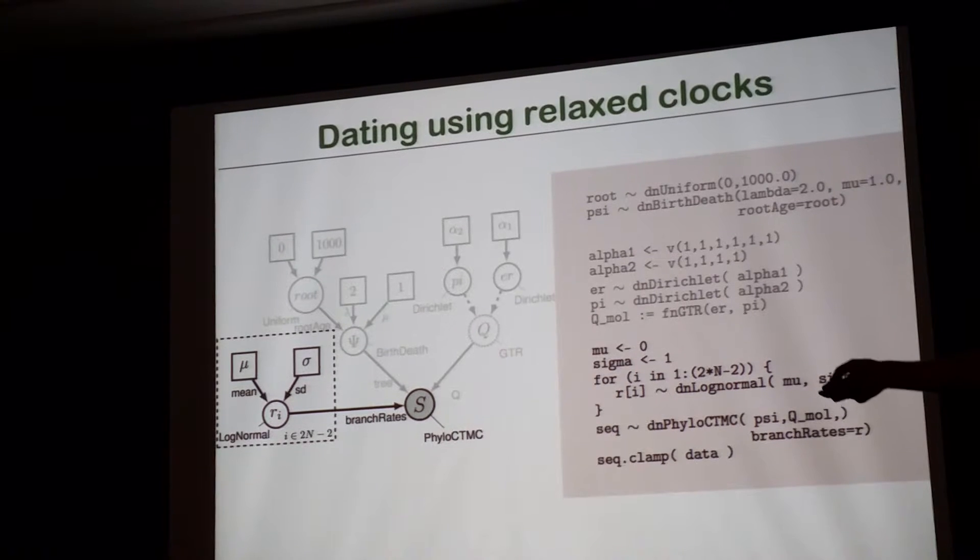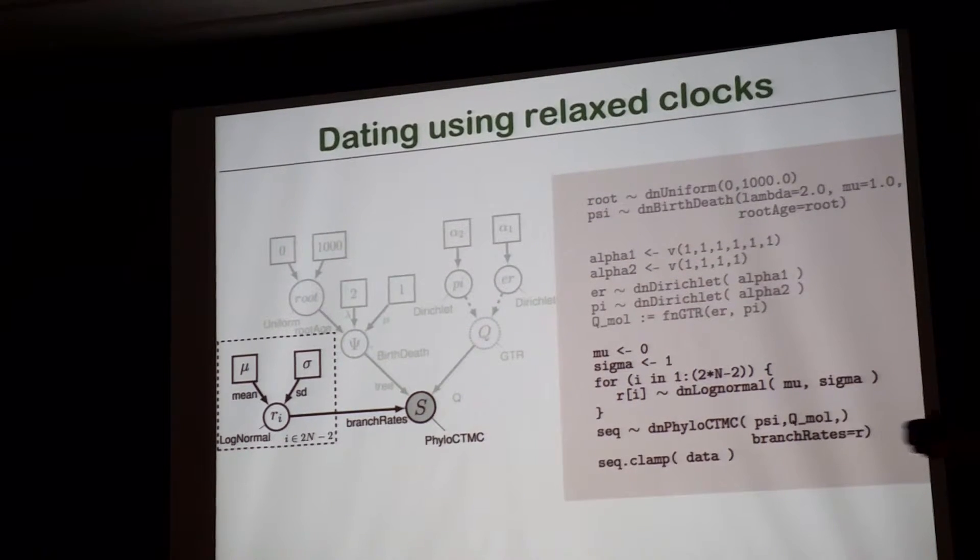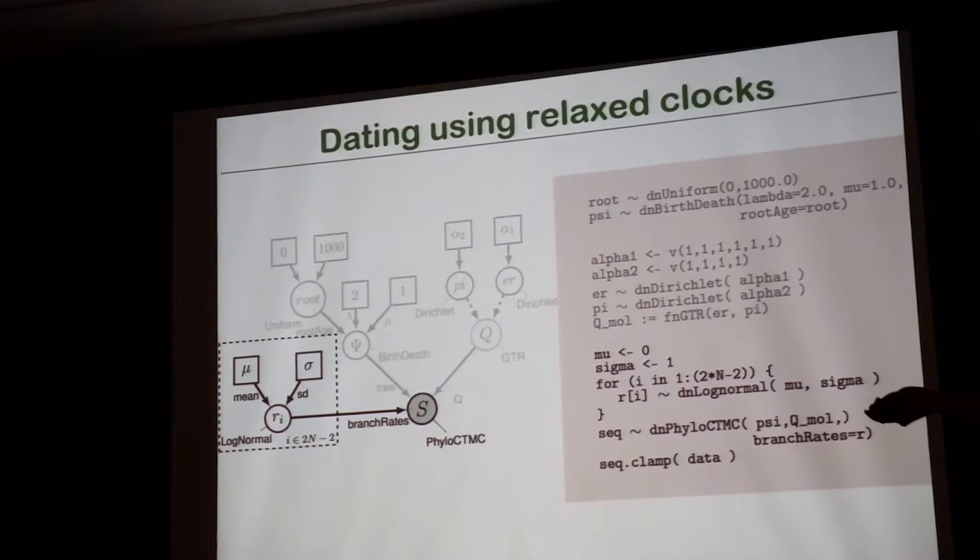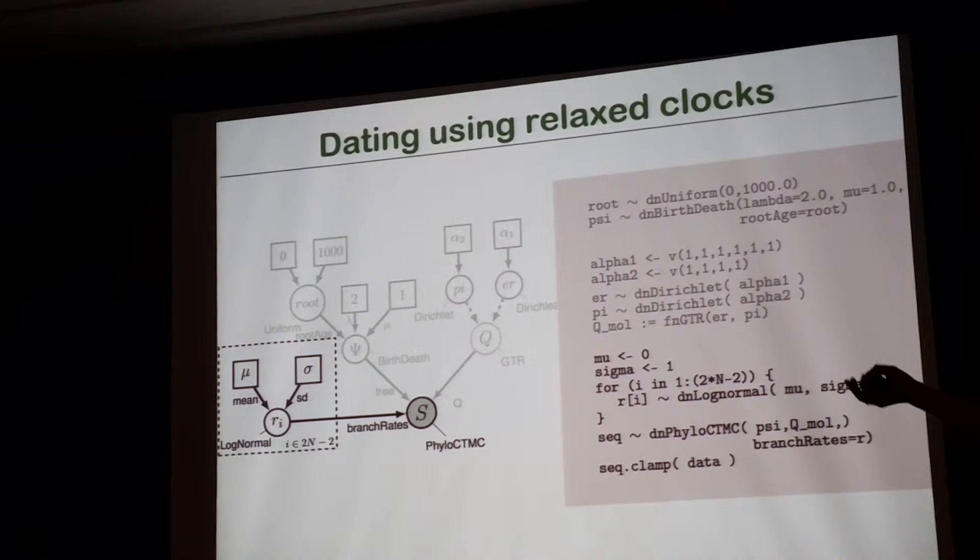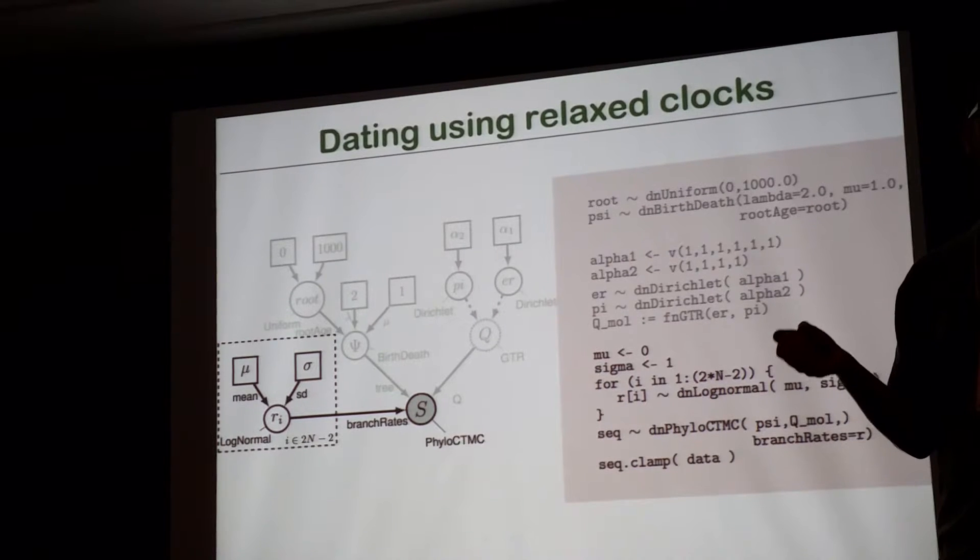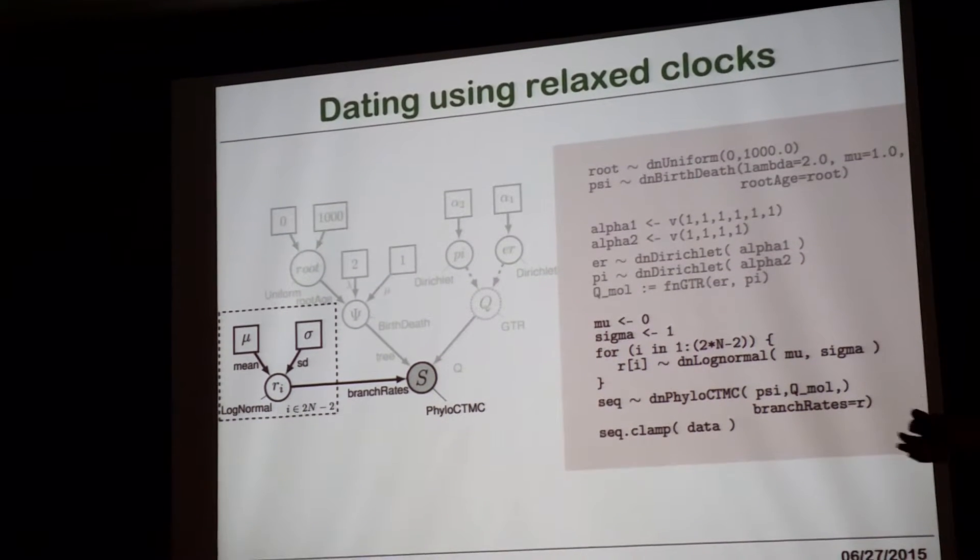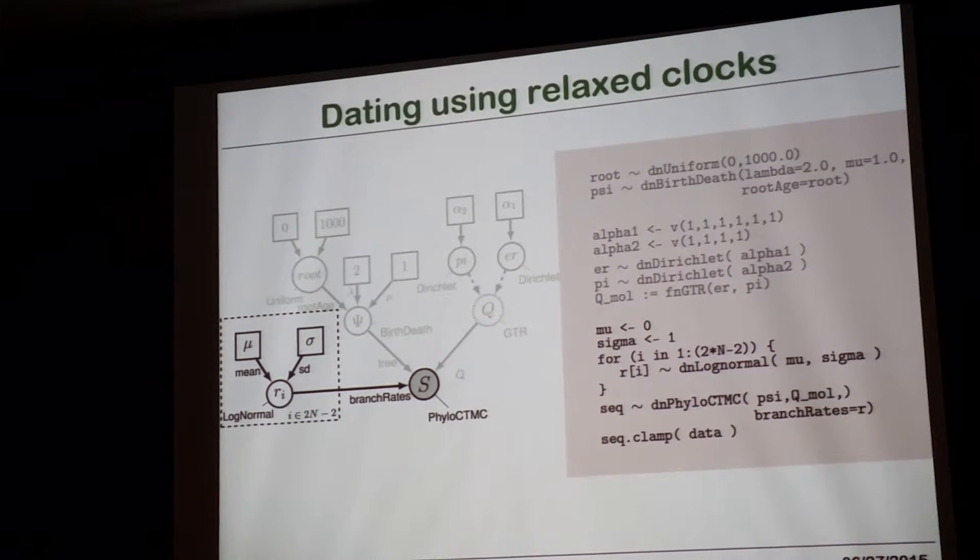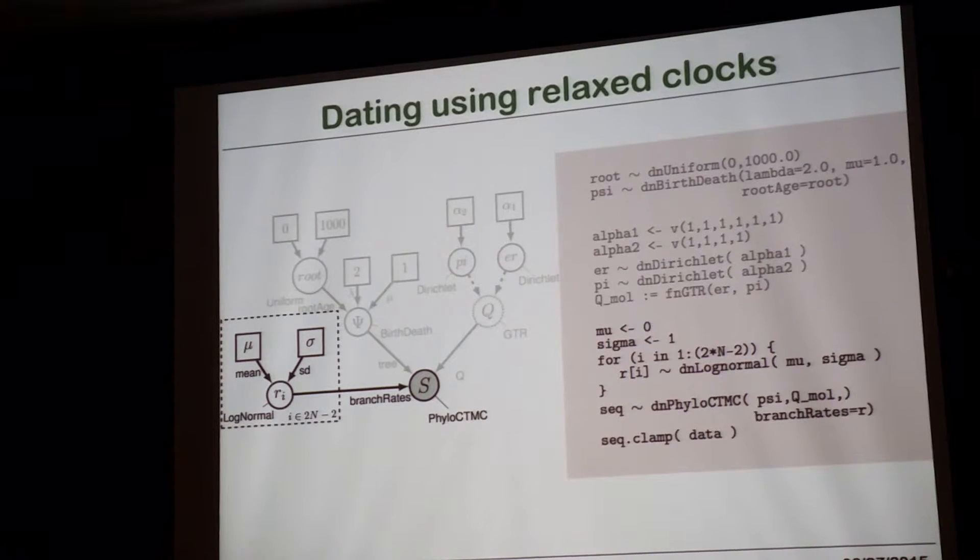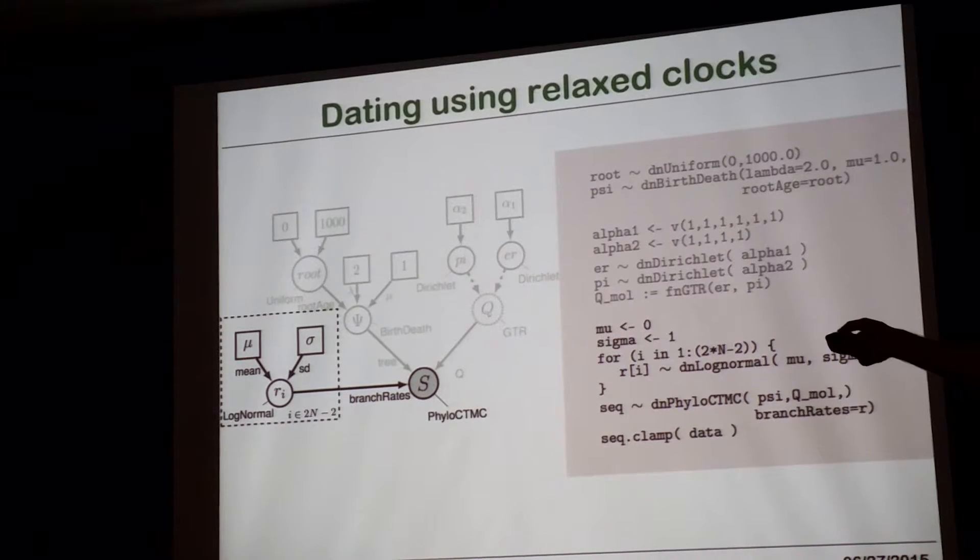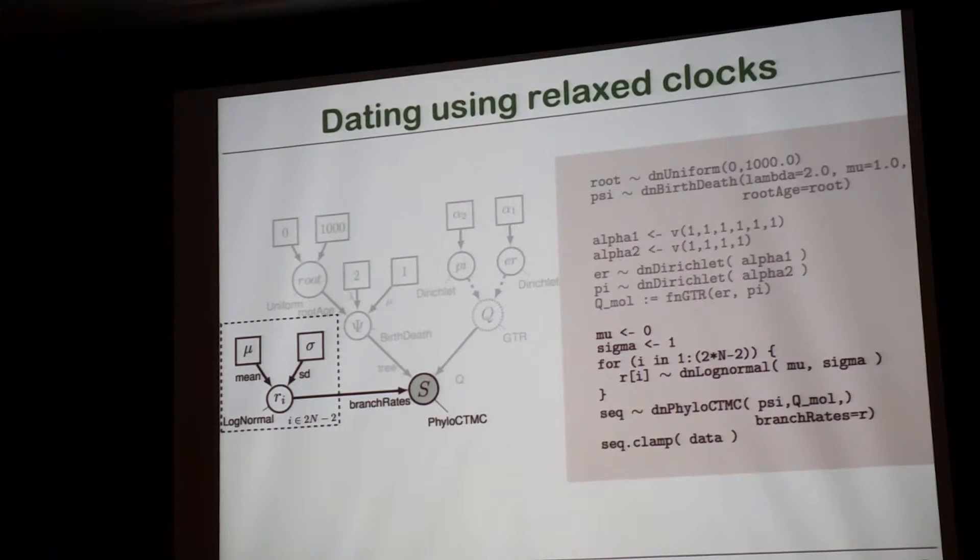Doing it in that way, I actually have just created the uncorrelated log-normal relaxed clock model, so the UCLN model. If I want to exchange that log-normal distribution by a gamma distribution, I have the independent gamma rates, or IGR model. If I would exchange just this variable by an exponential distribution and just have a single rate parameter, then I have the uncorrelated exponential distribution. So I have a lot of freedom in the way how I want to specify prior distributions or different models to model the variability in the phylogenetic process over here. I could also specify hyperpriors on the mean rate, on the standard deviation, if I wanted to estimate those parameters as well.